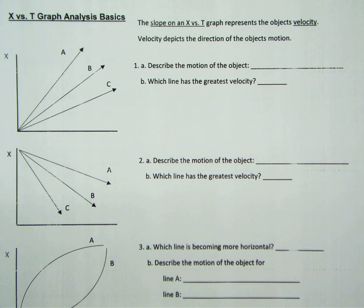So let's talk about analyzing an x-versus-t graph. The first thing that you need to know is that the slope represents the object's velocity whenever you're looking at an x-versus-t graph.